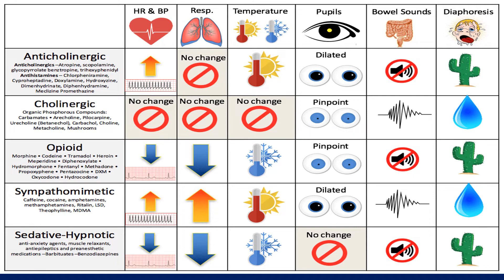Let's start with anticholinergic. Anticholinergic toxidromes increase the heart rate and blood pressure. They don't really affect the respirations. They increase the temperature. They dilate the pupils. Bowel sounds will be decreased. And the patient is going to be dry — I really want to emphasize that they're going to be dry.